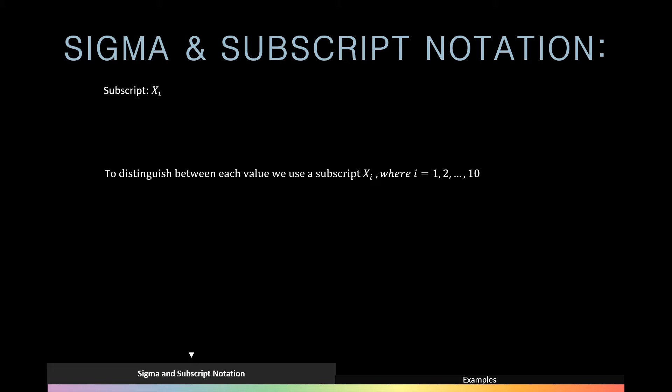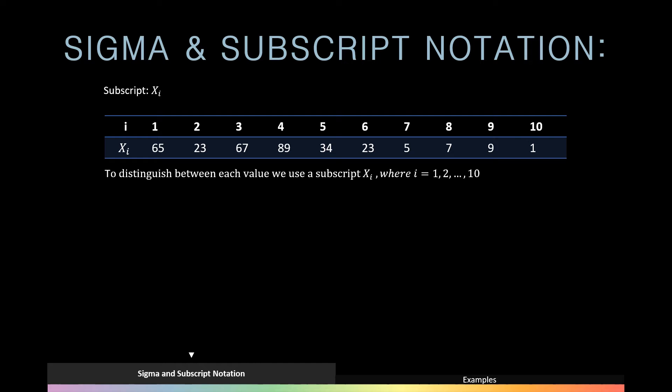So for example, if we had the following values 65, 23, 67 all the way up until 1, we could distinguish or refer to specific values by using a subscript. For example, x3 is 67, x7 is 5, and x10 is 1.